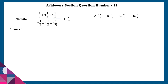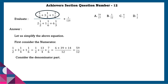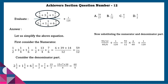Achieve section question number 12: Evaluate. Considering the numerator part, if we simplify it we get 59 by 12. Considering the denominator part, we get 60 by 6. Substituting, that is 59 by 12 divided by 60 by 6, plus 1 by 120. Simplifying, we get the answer as 1 by 2.